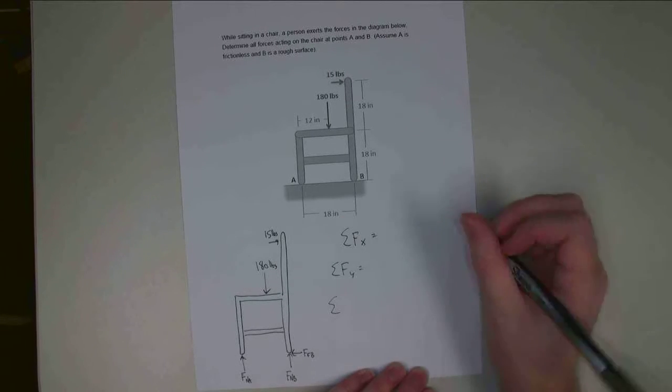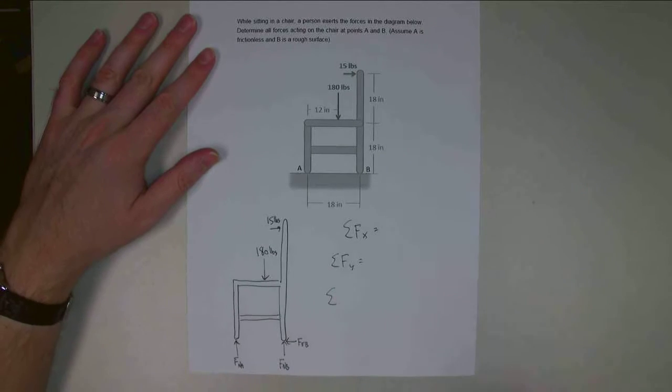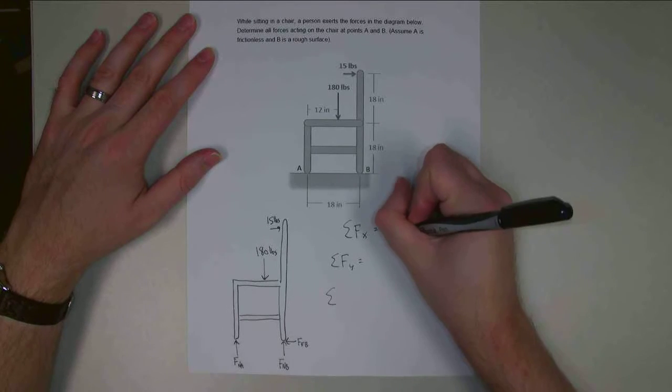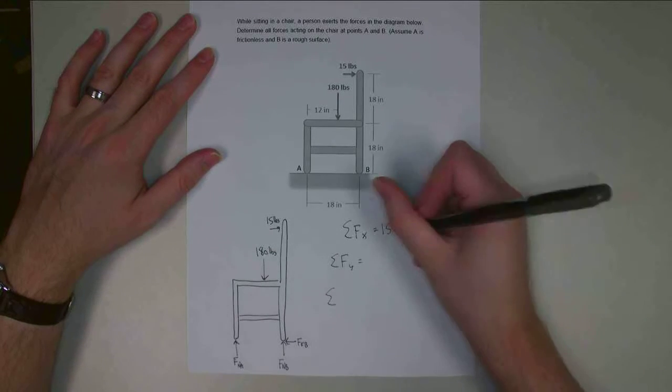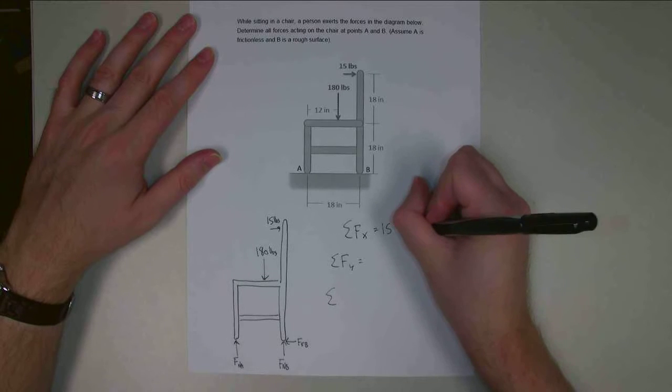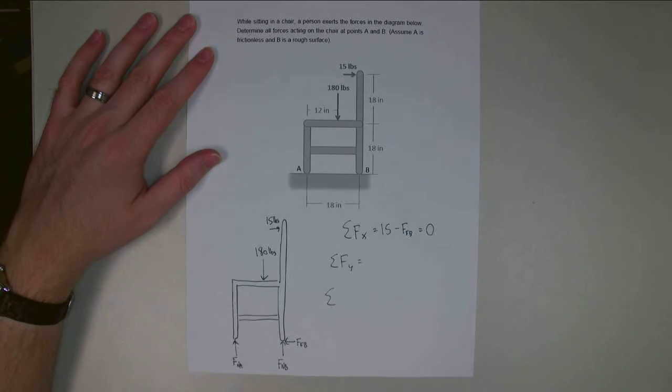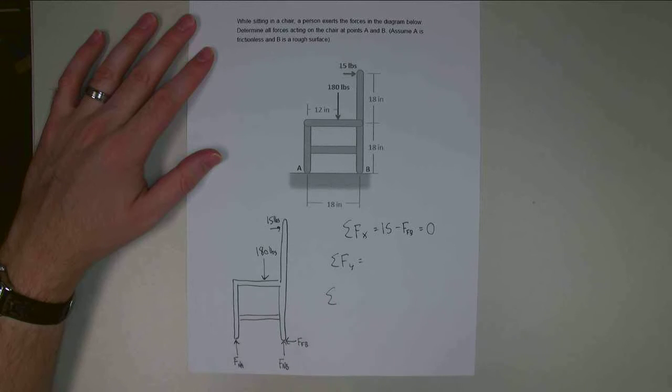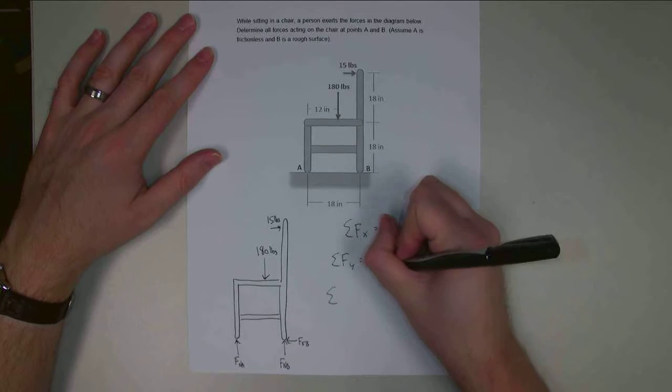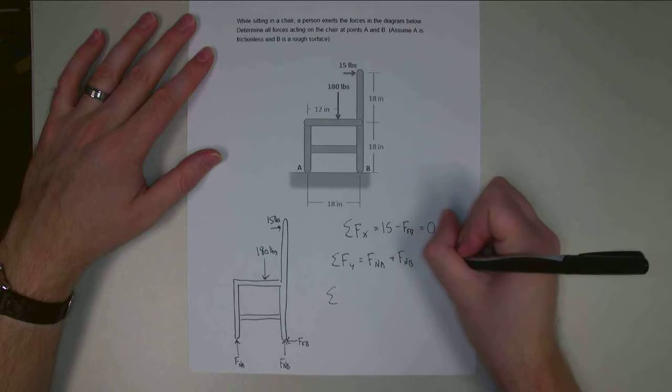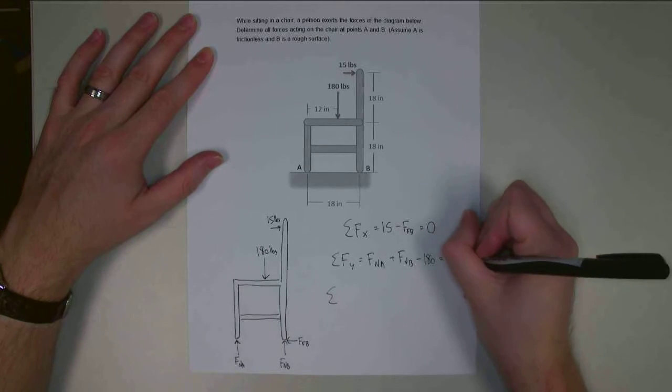And we'll pick a point for that. So in the x-direction, I'm going to have 15 minus F_FB equals 0. In the y-direction, I'm going to have F_A plus F_NB minus 180 equals 0.